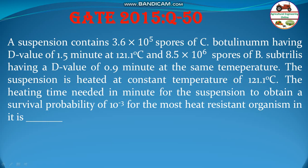Hello students. This is a problem from GATE 2015, question number 50. A suspension contains 3.6×10^5 spores of C. botulinum having a D value of 1.5 minutes at 121.1°C, and 8.5×10^6 spores of B. subtilis having a D value of 0.9 minutes at the same temperature. The suspension is heated at a constant temperature of 121.1°C. The heating time needed in minutes for the suspension to obtain a survival probability of 10^-3 for the most heat-resistant organism.